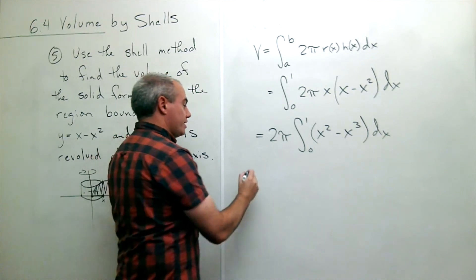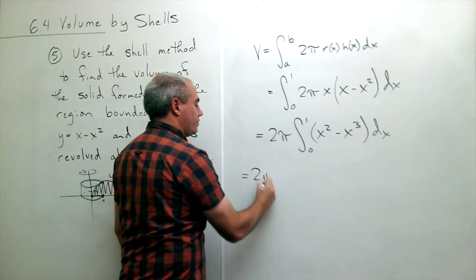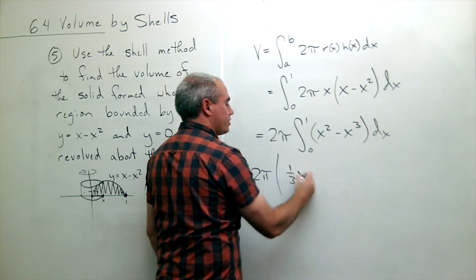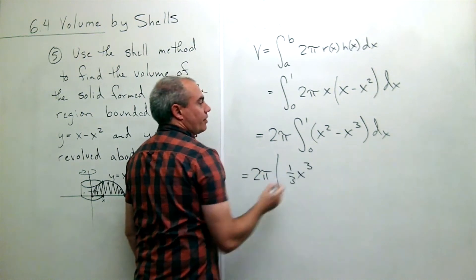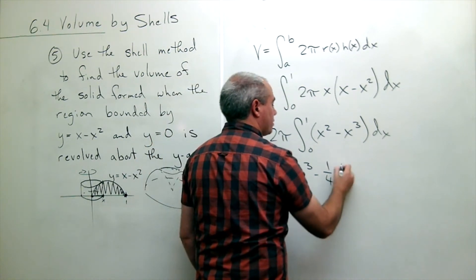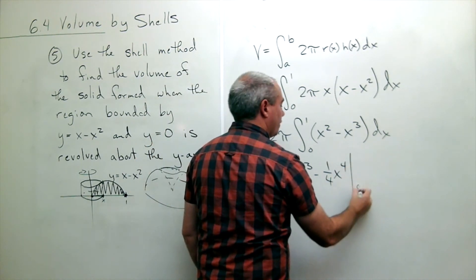Alright, now we're ready to take an anti-derivative. I still have 2 pi. The anti-derivative of x squared is 1 third x cubed. The anti-derivative of negative x cubed is negative 1 fourth x to the fourth evaluated from 0 to 1.